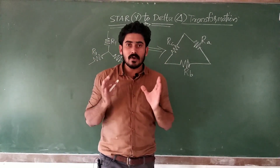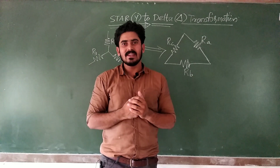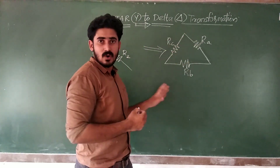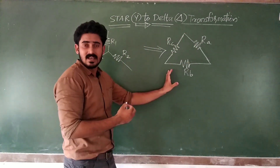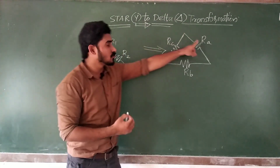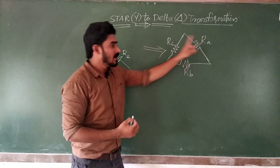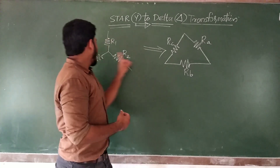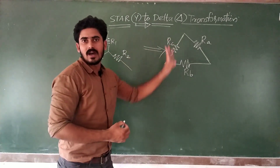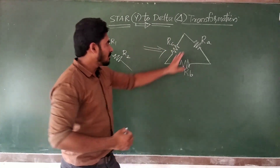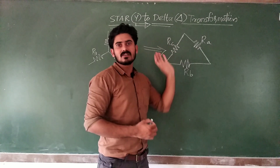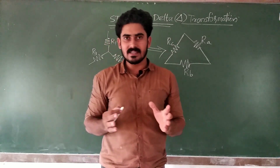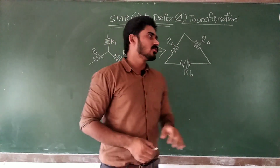So how can you find out the values of these resistors Ra, Rb, and Rc if you are converting from star to delta? The value of R1 will be changed into Ra, the value of R2 will be changed into Rb, and the value of R3 is changed into Rc. So what will be the values of Ra, Rb, and Rc? This is the question we have to discuss.